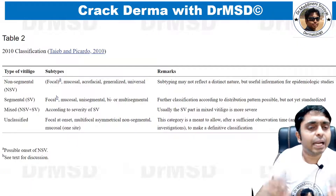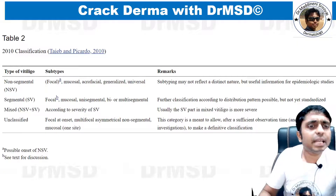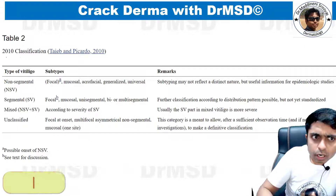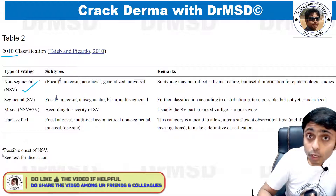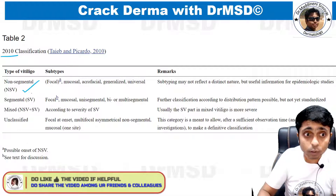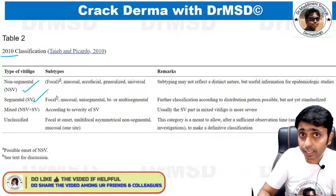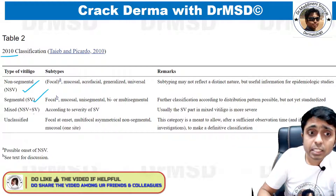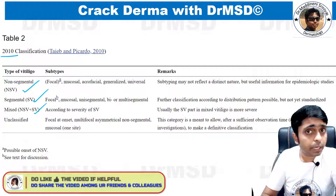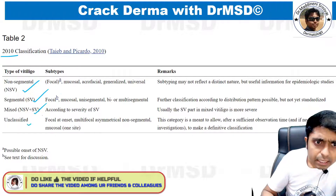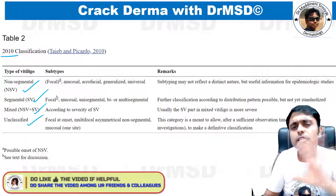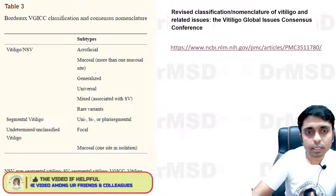This was the older classification followed for vitiligo: non-segmental vitiligo, segmental vitiligo, a mixed type combining non-segmental and segmental, and unclassified. That was the older classification.